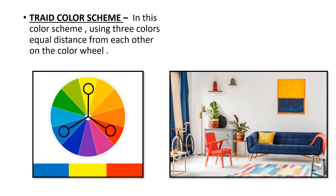The third color scheme is triad color scheme. In this scheme, three colors that are equally spaced from each other on the color wheel are used. As seen in the photo, yellow, red, and blue are used — that is the triad color scheme.